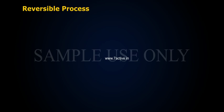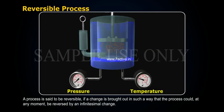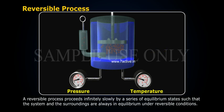Reversible process: A process is said to be reversible if a change is brought out in such a way that the process could, at any moment, be reversed by an infinitesimal change. A reversible process proceeds infinitely slowly by a series of equilibrium states such that